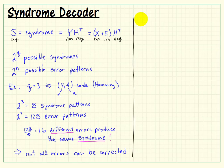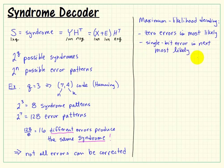All right, so if not all errors can be corrected, which ones ought we to look at? Well, we call this maximum likelihood decoding. We think of it this way. Zero errors in a well-designed system should be considered most likely. And then after that, a single bit error in a codeword would be the next most likely.